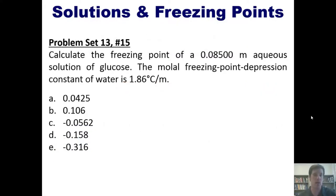That brings us to a wonderful problem. Calculate the freezing point of a 0.08500 molal aqueous solution of glucose. The molal freezing point depression constant of water is 1.86°C per molal. As per usual, I'm not going to answer this question in this video, but I'll post a link to a separate video which you're welcome to watch.